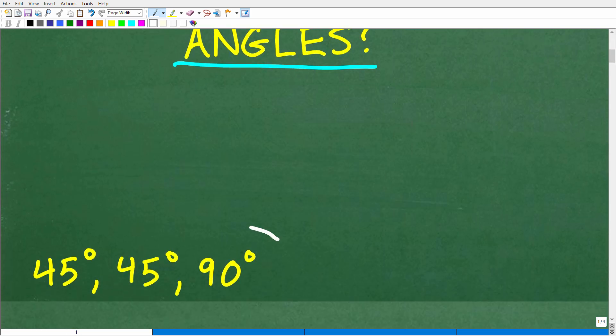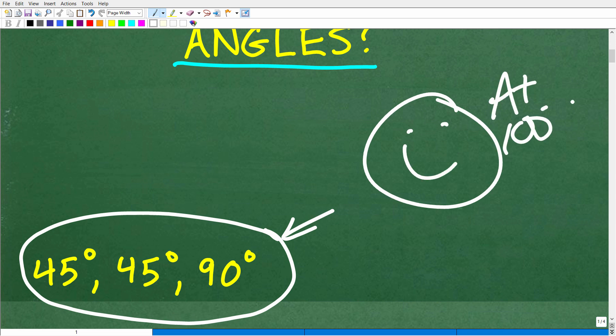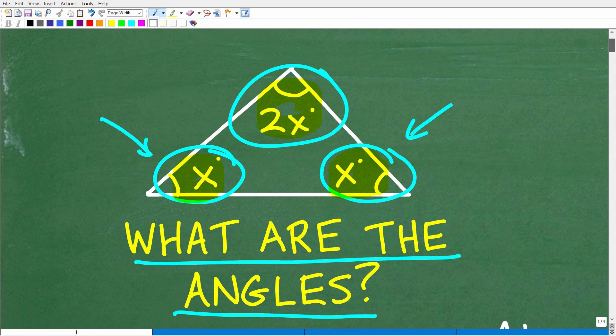The correct answer is 45 degrees, 45 degrees, and 90 degrees. All right, now if you got this right, that is fantastic. We have to give you a nice little happy face and a plus 100% and multiple stars. So you can tell your friends and family that indeed you are a certified professional expert when it comes to solving basic triangle problems.